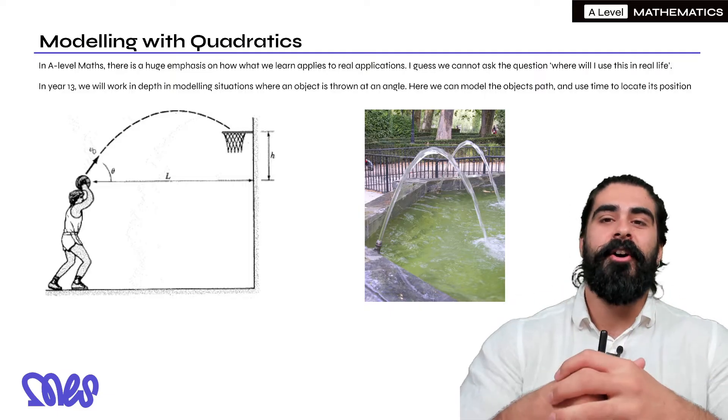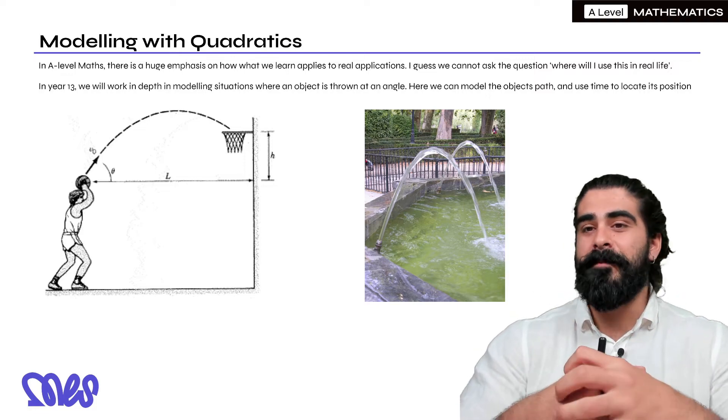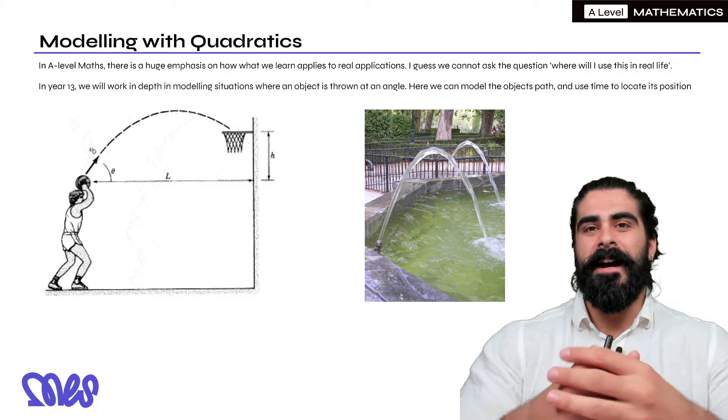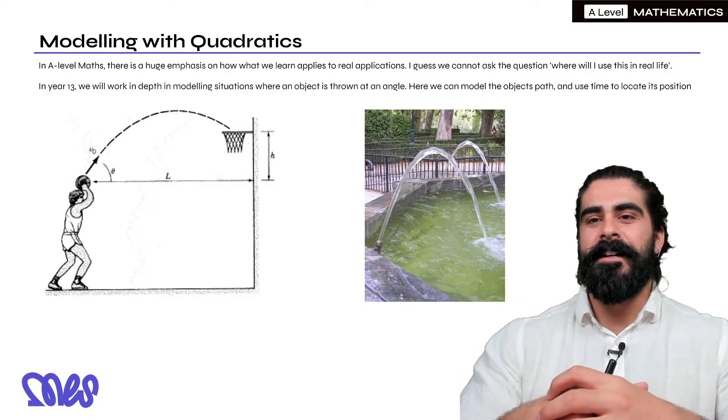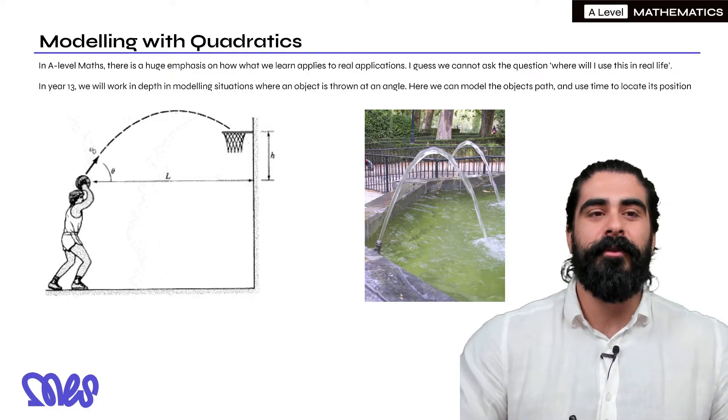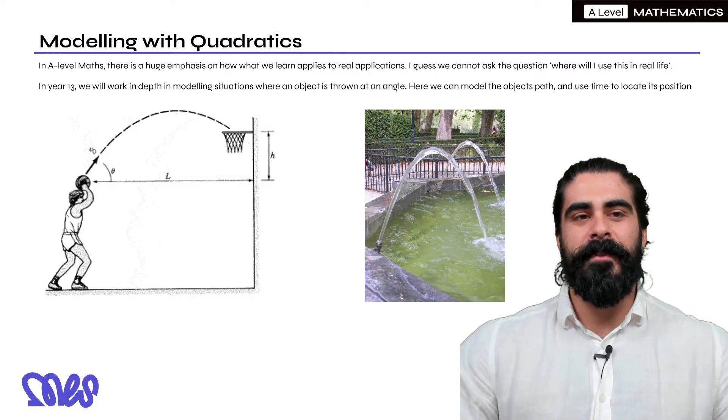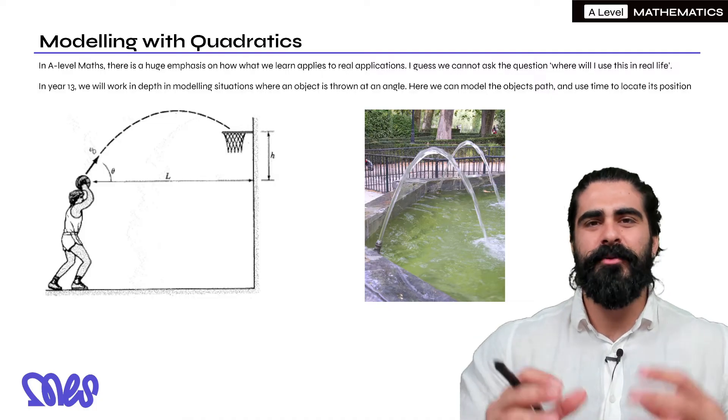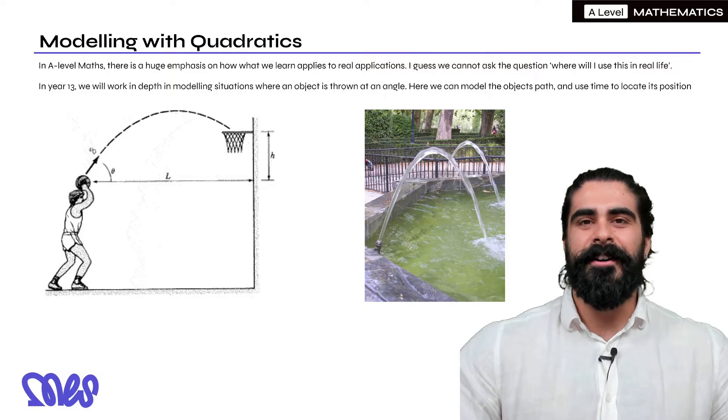In A-level maths there is a huge emphasis on how what we learn applies to real applications. I guess now we can't ask the question of where will we use this in real life. I get all the time, probably not now that you're in A-levels, you've decided to choose A-level maths so I hear it much less but when you teach Key Stage 3, they do Pythagoras' theorem and they just say where do we use this in real life. Usually the answer is mechanics and they still don't really understand but I try and give as best of a description I can.